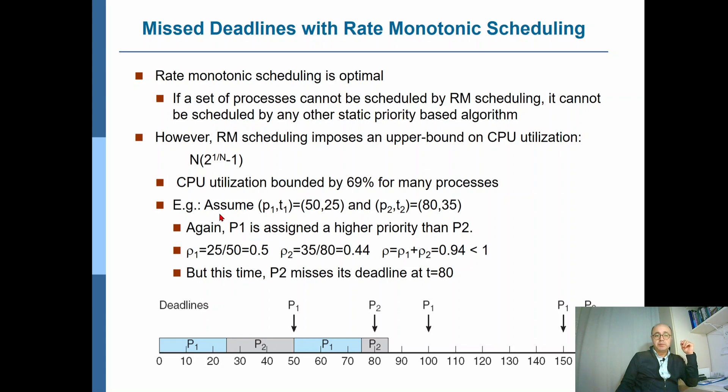However, if we try this, P1 still has the higher priority. We'll start with P1. Then we continue with P2. P2 executes for 30 time units.